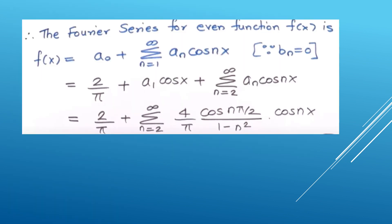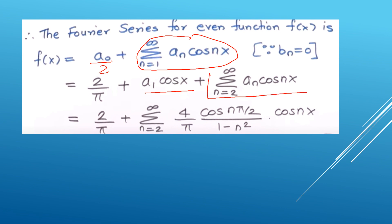Now the Fourier series expansion: f(x) = a₀/2 + Σ aₙ cos(nx). With a₀ = 4/π, a₀/2 = 2/π. Since a₁ = 0, we start the sum from n = 2. Substituting aₙ = (4/π) cos(nπ/2) / (1 − n²), the Fourier series becomes: f(x) = 2/π + Σ (n=2 to ∞) [4cos(nπ/2) / (π(1 − n²))] cos(nx). This is the Fourier series expansion of |cos x|.